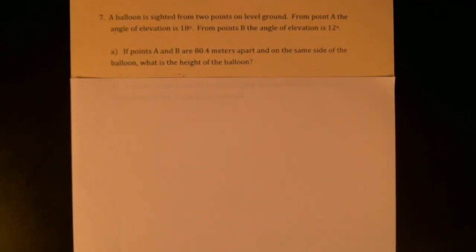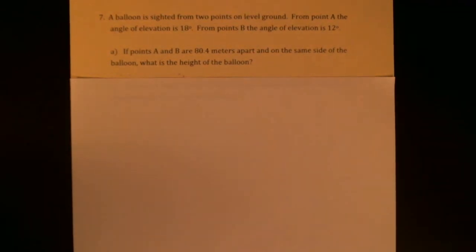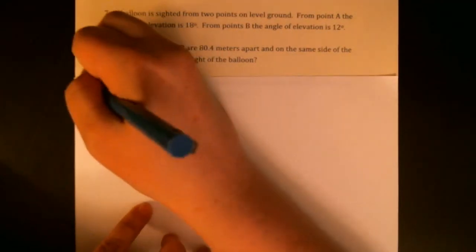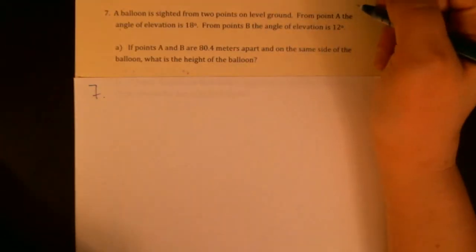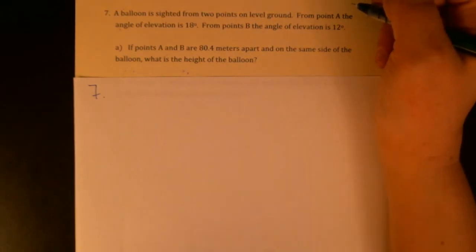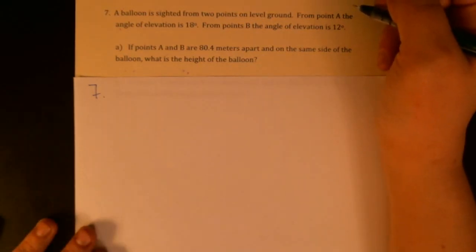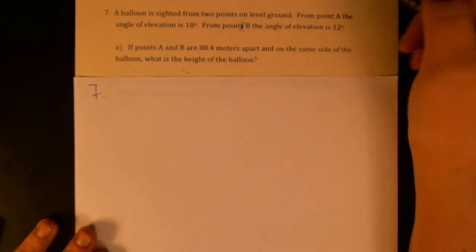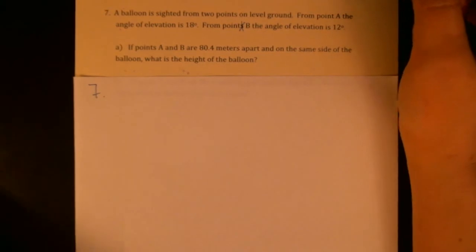Hey everyone, let's work on number seven from applications involving right triangles. This one has two parts, so we're talking about a balloon that's been sighted from two points on level ground. From point A we know the angle of elevation is 18 degrees, and from point B the angle of elevation is 12 degrees.